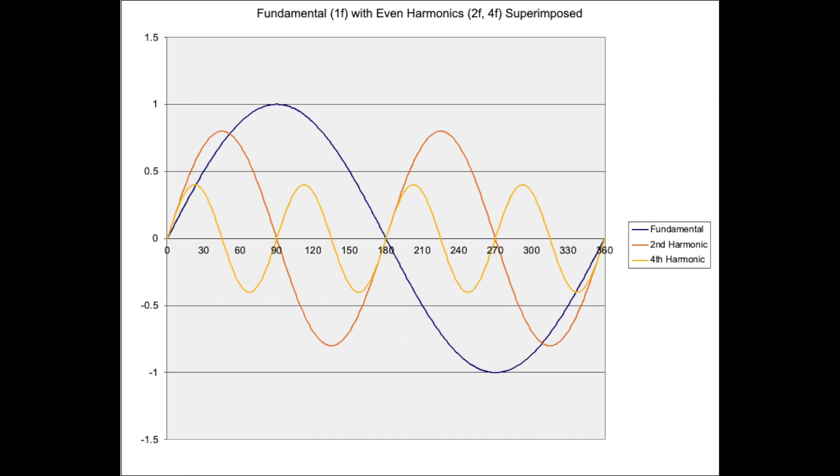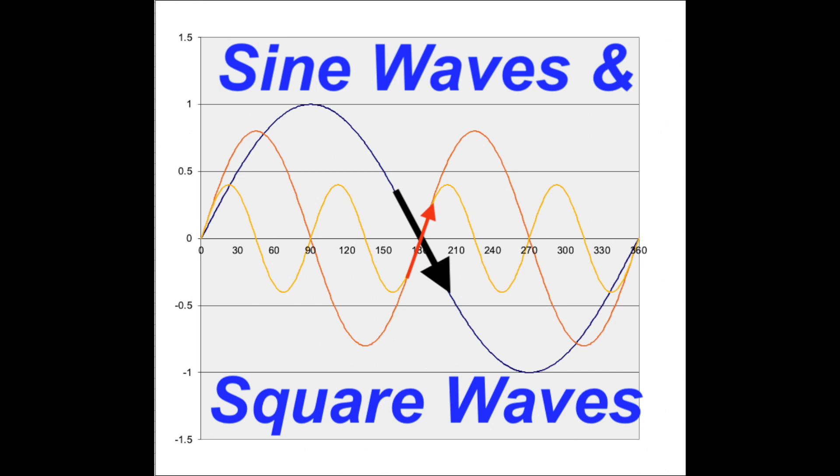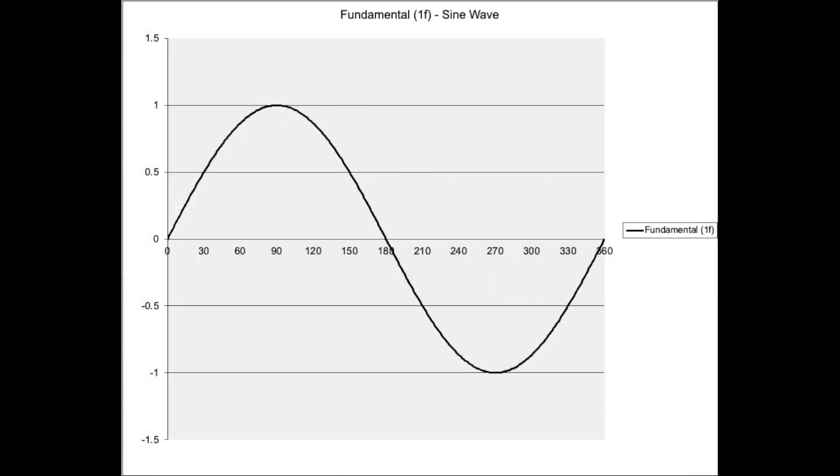The takeaway point here is that different complex waveforms are made up of different harmonics. A sine wave is considered a pure waveform, and so has no harmonics, in theory anyway.